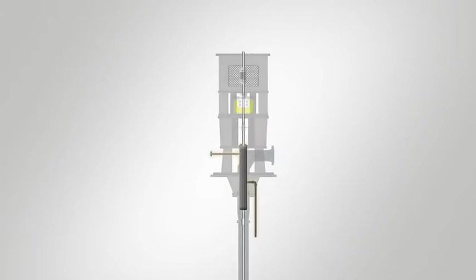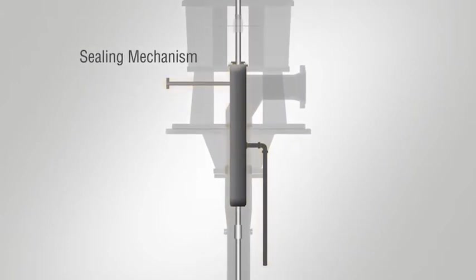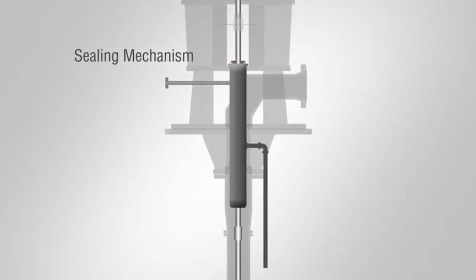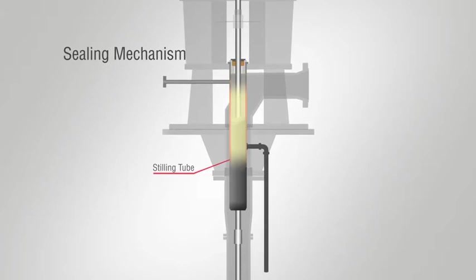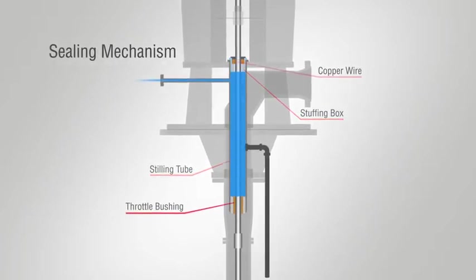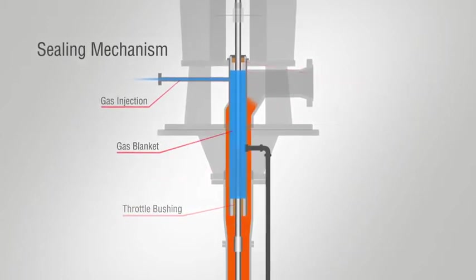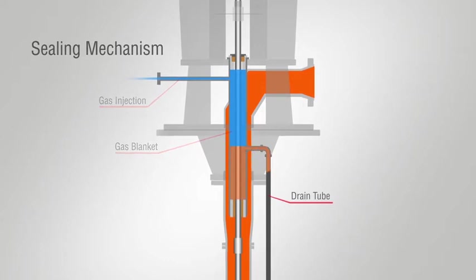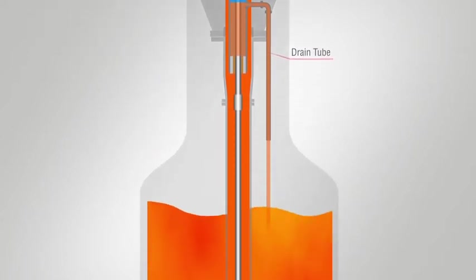Seal maintenance is minimal with the FlowServe Molten Salt VTP. For extended worry-free operation at elevated temperatures, the pump uses a well-proven controlled leakage device consisting of a stilling tube and a stuffing box packed with square braided copper wire. A throttle bushing and gas blanket inside the stilling tube isolate the molten salt from the atmosphere while preventing heat transfer to the packing. Molten salt leakage is drained safely back into the tank.